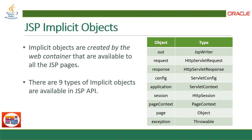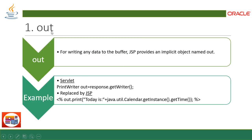The nine implicit objects are: `out` — of class JspWriter, which replaces the PrintWriter class of servlet; `request` — HttpServletRequest; `response` — HttpServletResponse; `config` — ServletConfig; `application` — ServletContext; `session` — HttpSession; `pageContext` — PageContext; `page` — Object; and `exception` — from Throwable. Now let's take a look at each of these one by one.